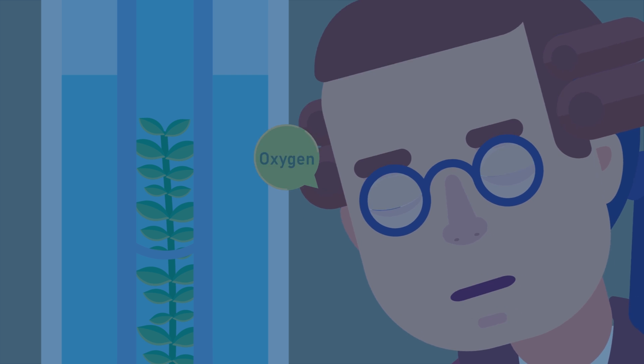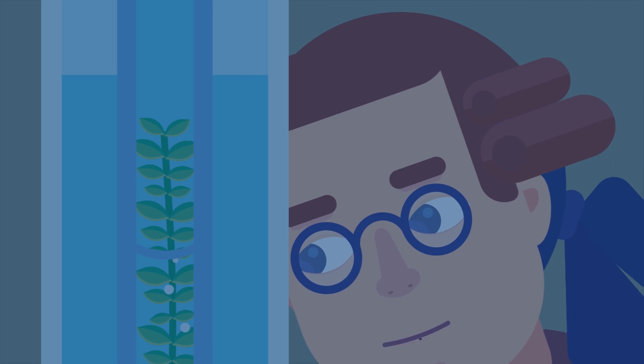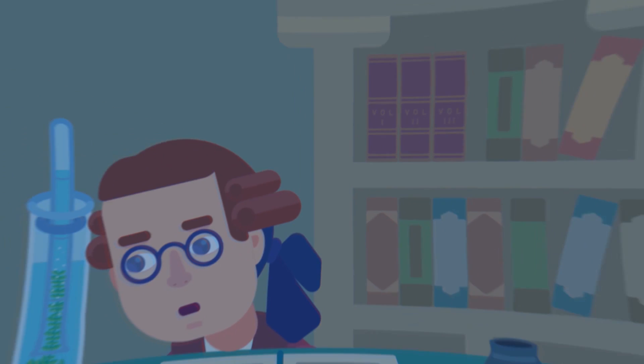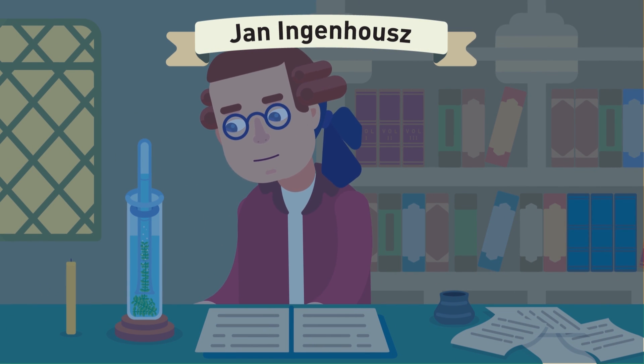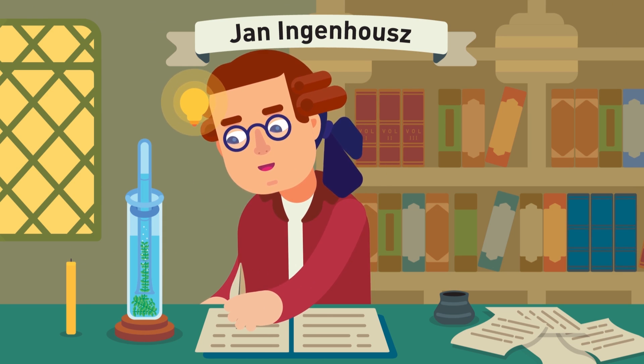He identified the gas as oxygen. He also observed that in the dark, plants give off carbon dioxide. This man was Jan Ingenhaus, and this is how he became the first man to discover the process of photosynthesis.